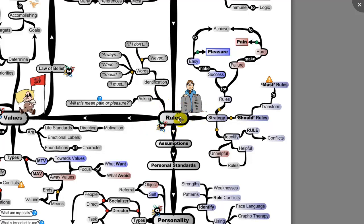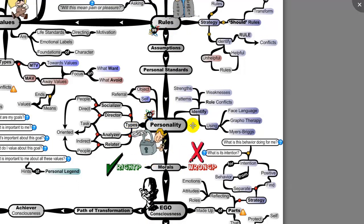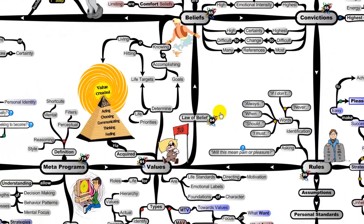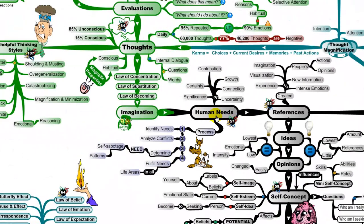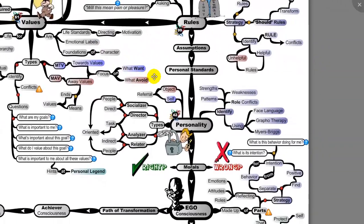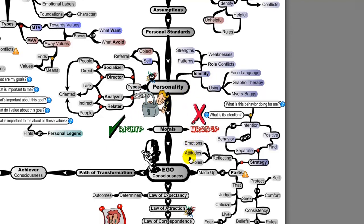Then we have our personality. Everything up to this point — convictions, rules, values, meta programs, references, human needs, your thoughts, all the influences in your life — everything combines and creates your personality. You are who you are as a result of all these things.